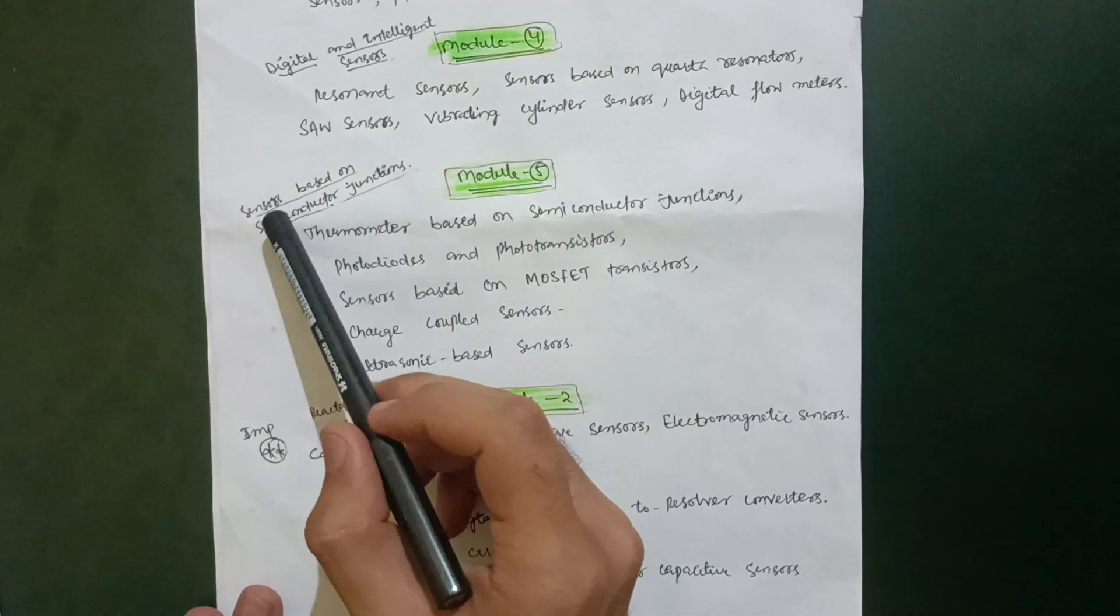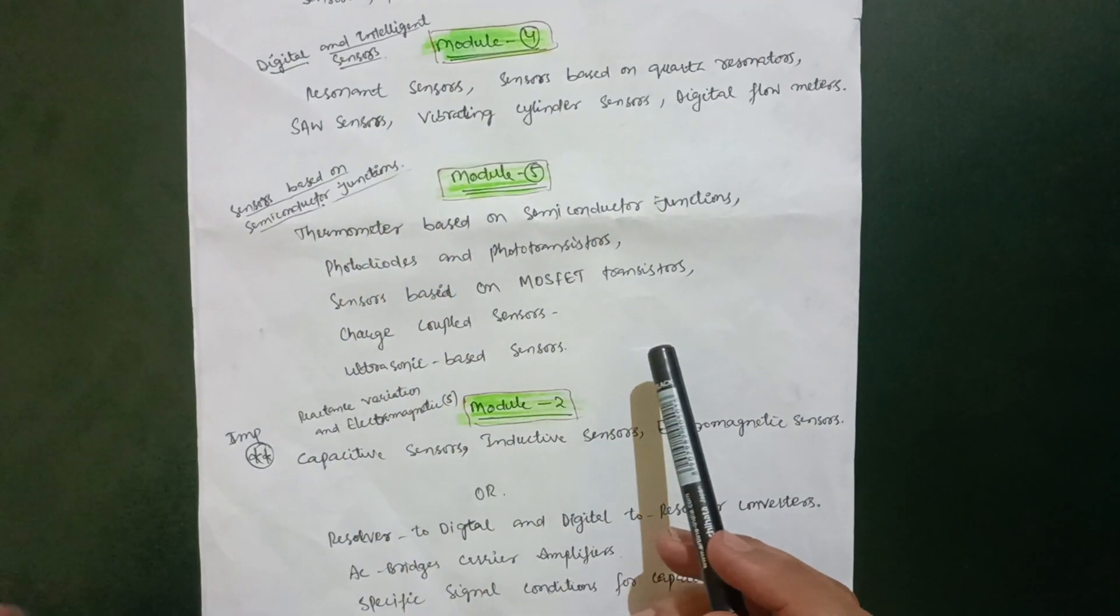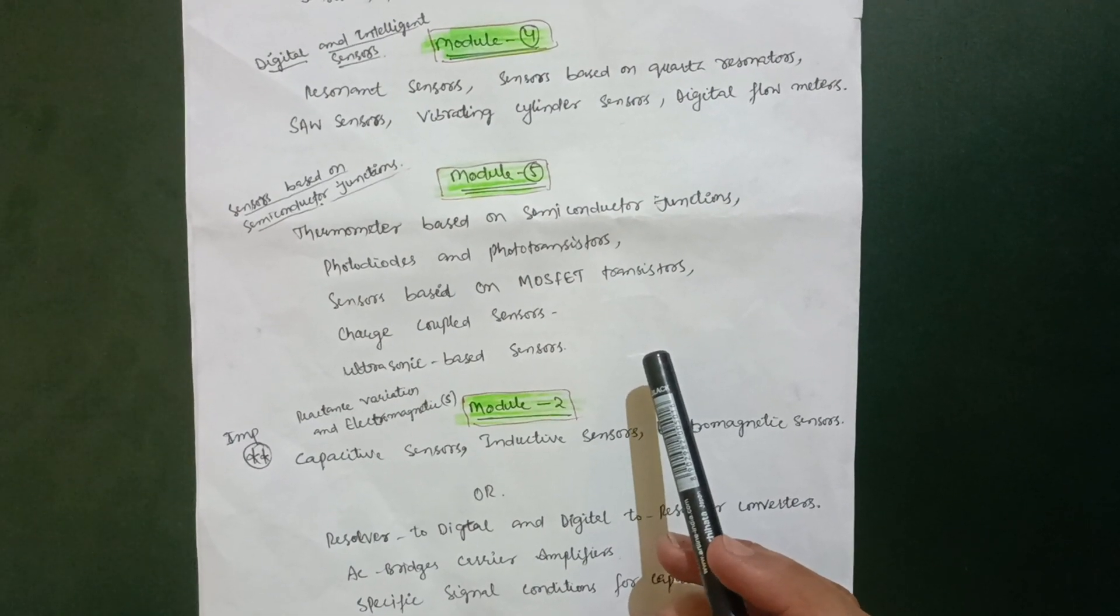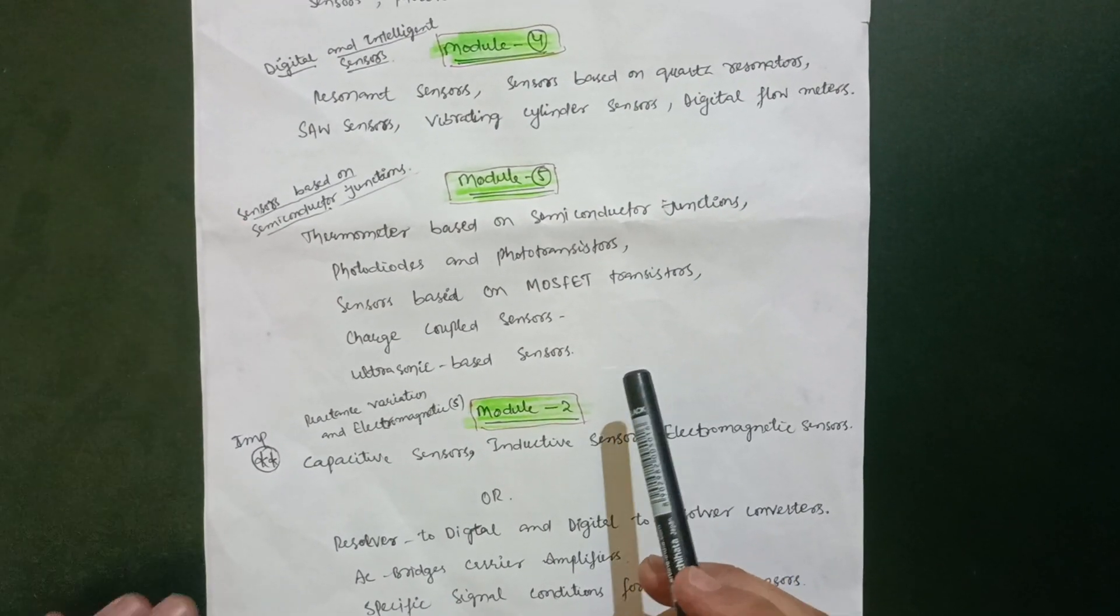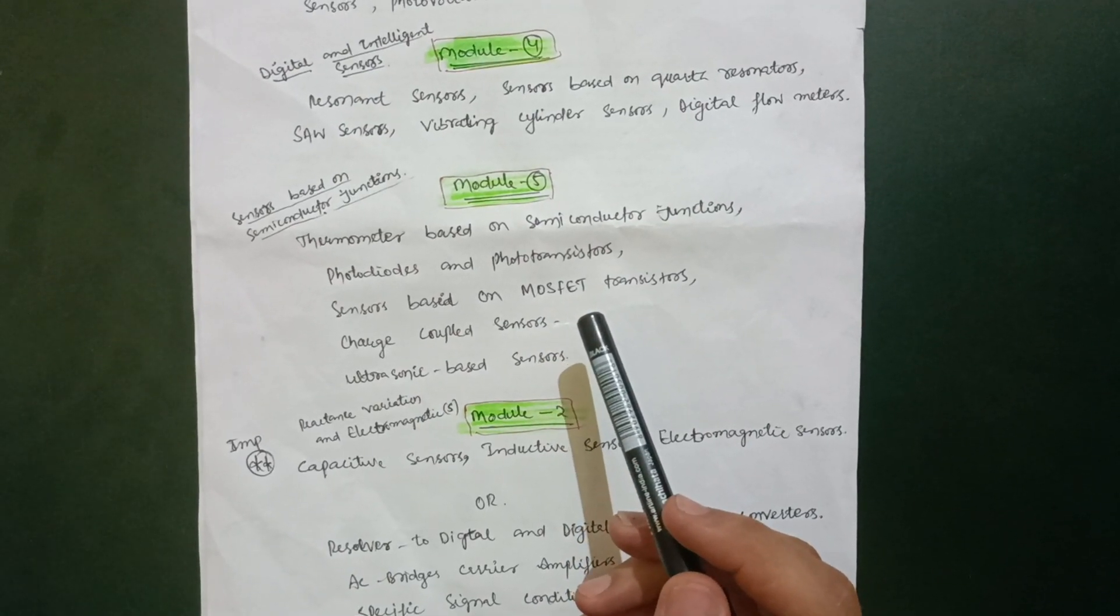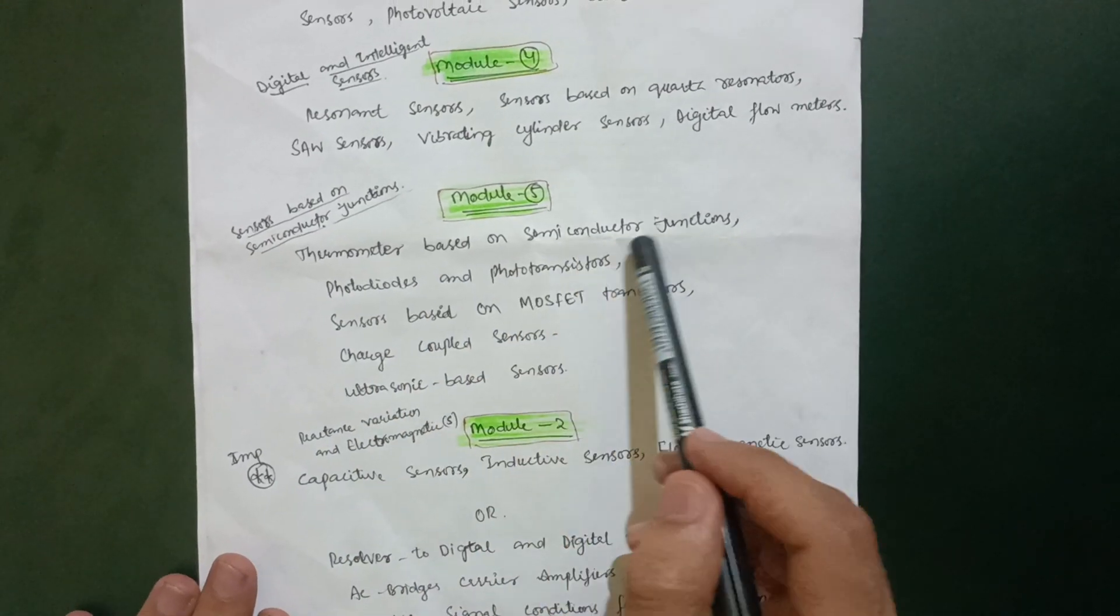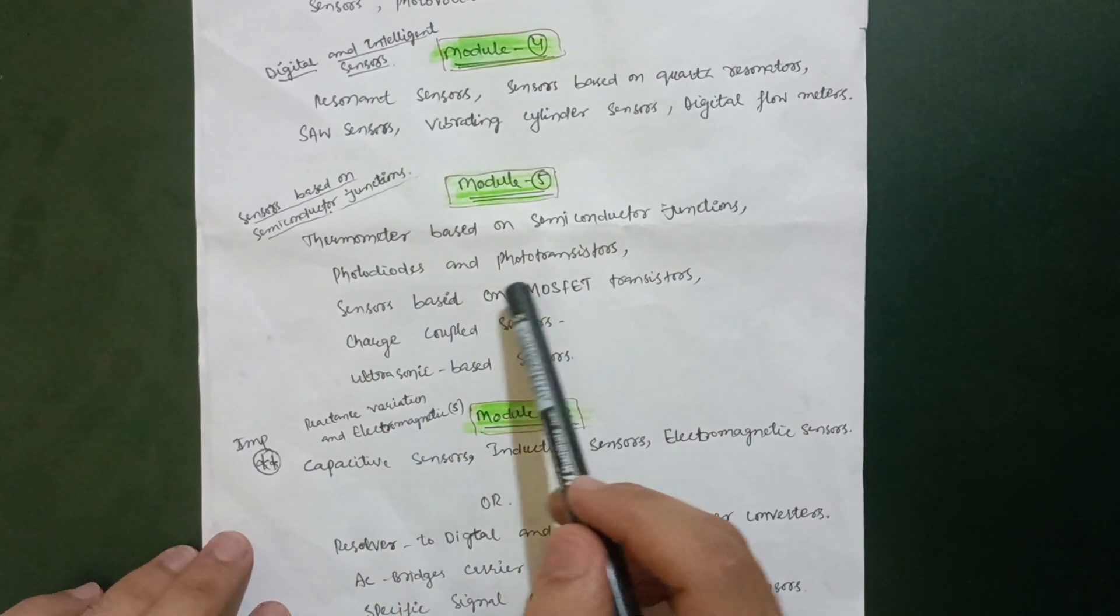Then Module 5 comes up - this is sensors based on semiconductor junctions. As you already know, it is the EC branch subject, so you may already be aware of MOSFET and DEMOSFET from the first semester itself in the electronic subject. Thermometer based on semiconductor junctions, photodiodes, and phototransistors.